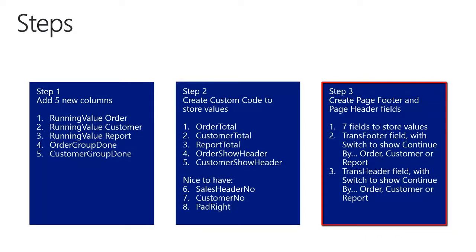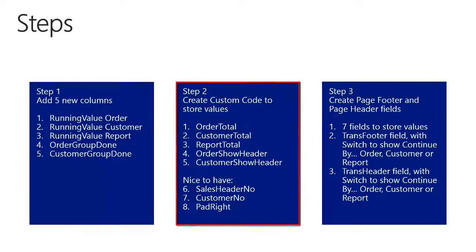So we are now at step number three. We now have the values which we need — created in step number one — and we have the necessary custom code — created in step number two. So now it's time to use all this. We will create seven fields in the page footer where we will set the value on the current page. If you are not familiar with RDLC reports, it is important to understand the rendering order: first the body is rendered, then the page header, then the page footer. Our reports could be more than one page, but when the body is rendering it has no idea which page number it's on, and cannot refer to the page header or page footer since these have not been rendered yet. This is why we can use report items from the page header and page footer to extract the information we need on the current page.